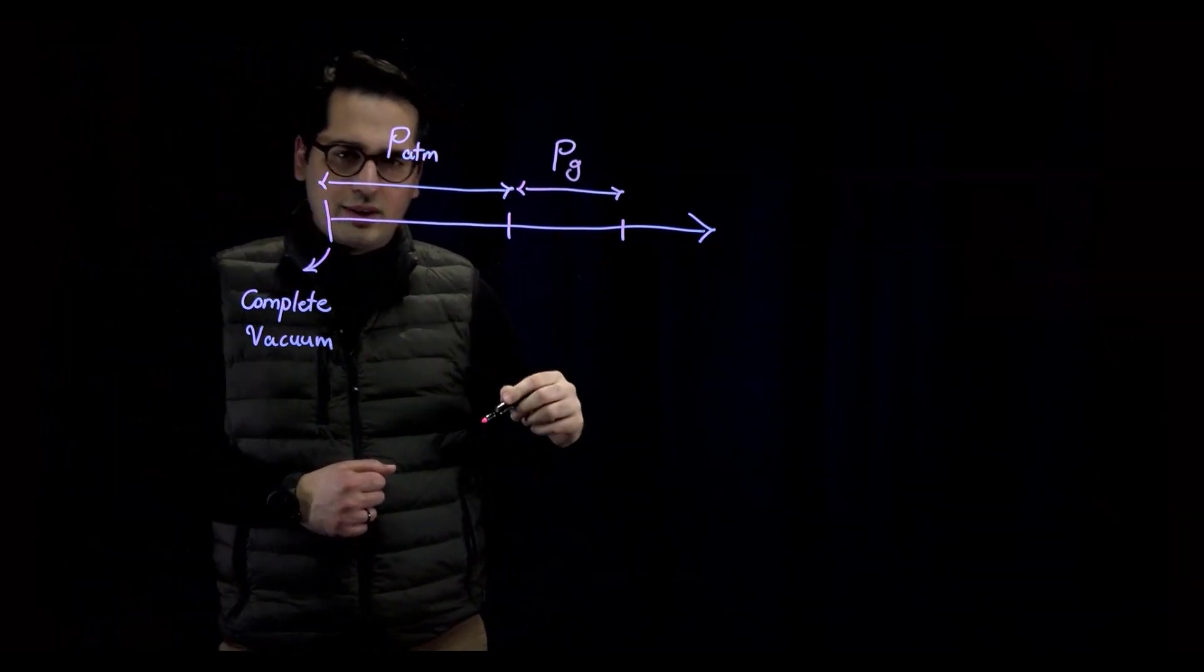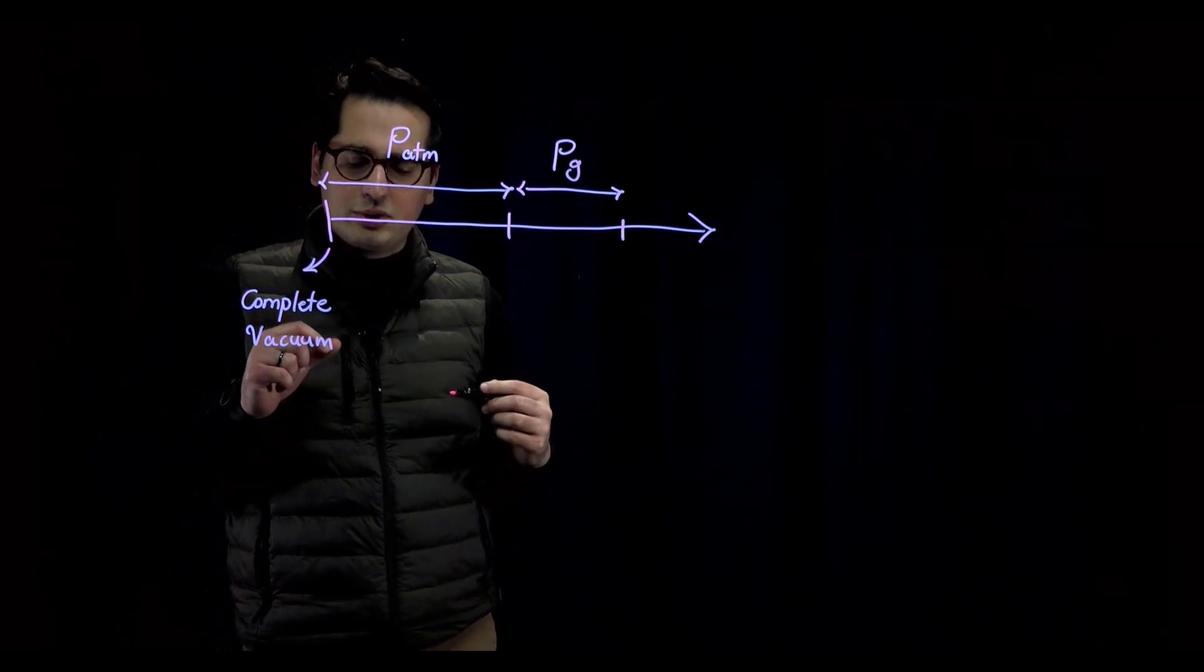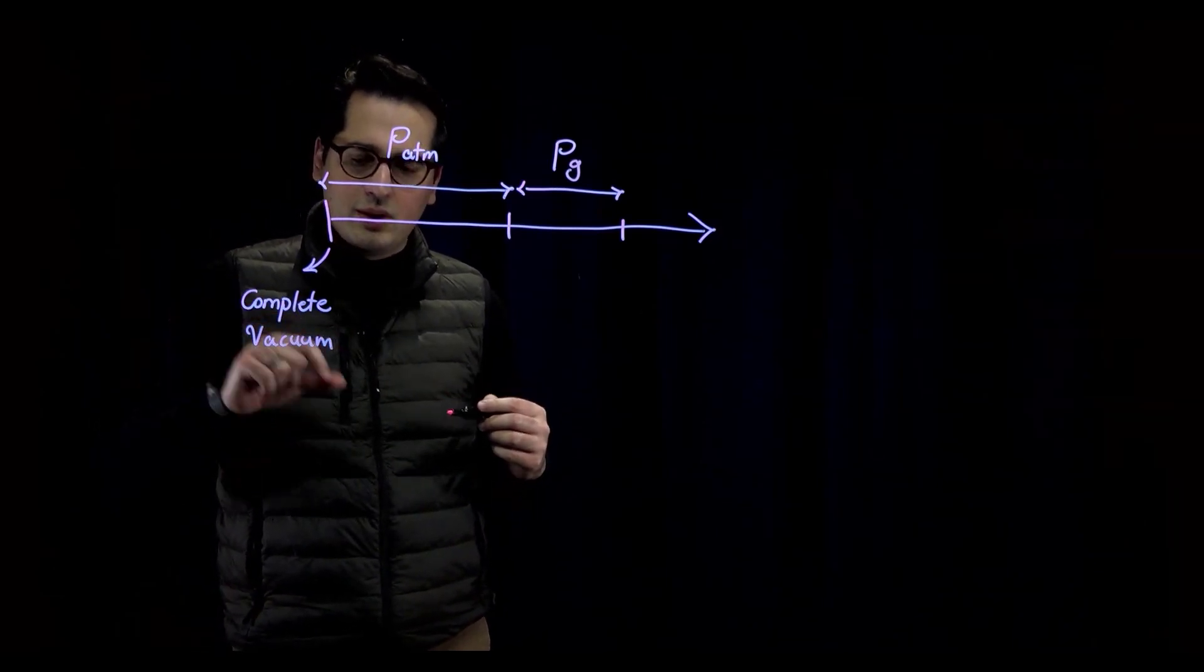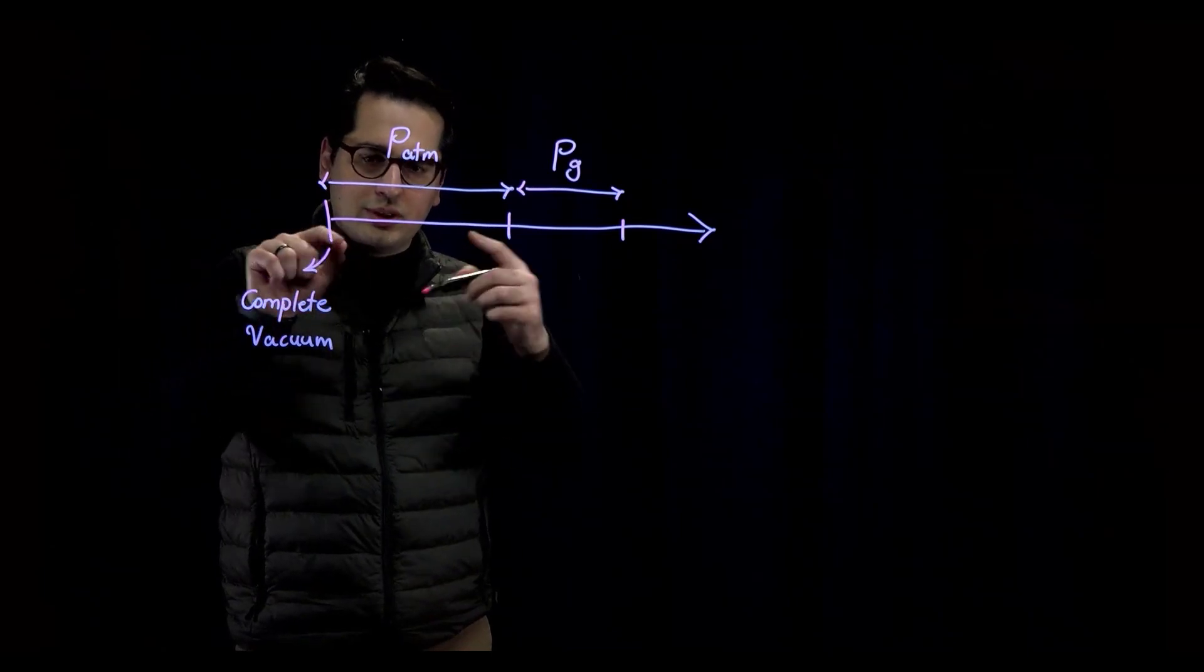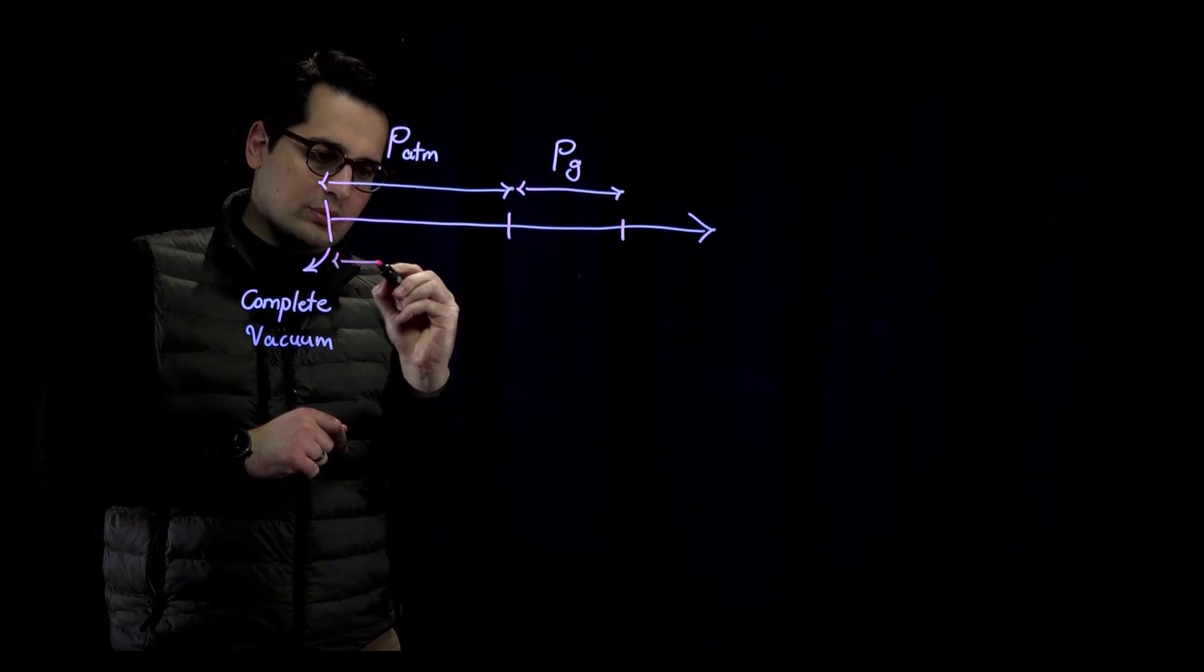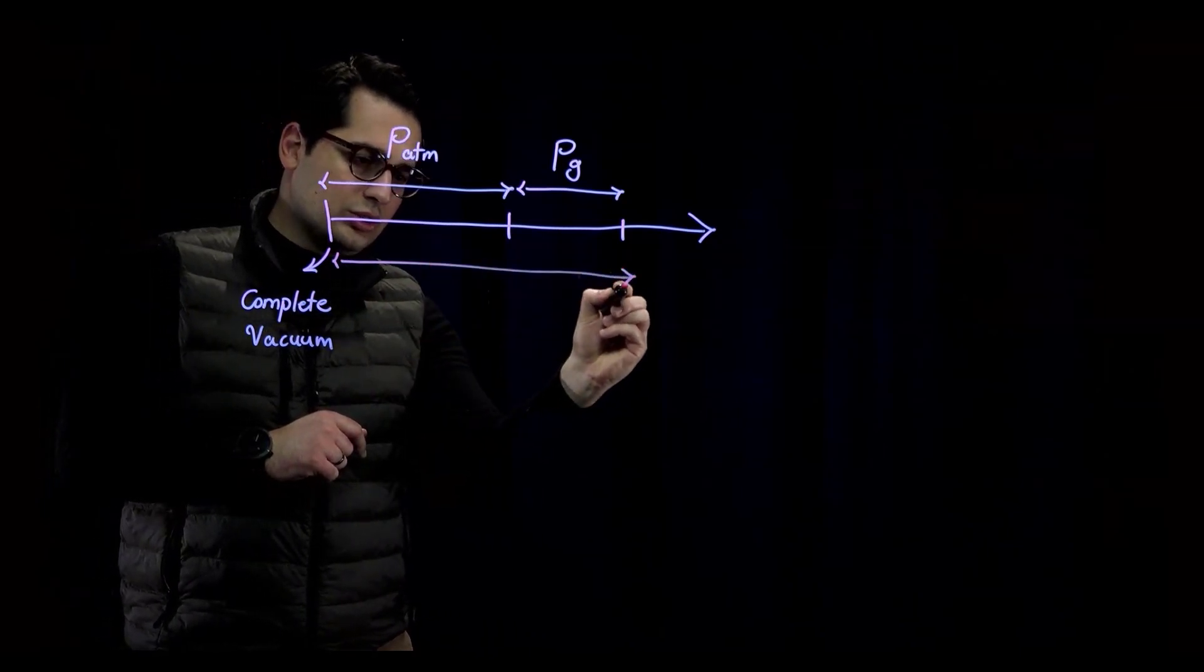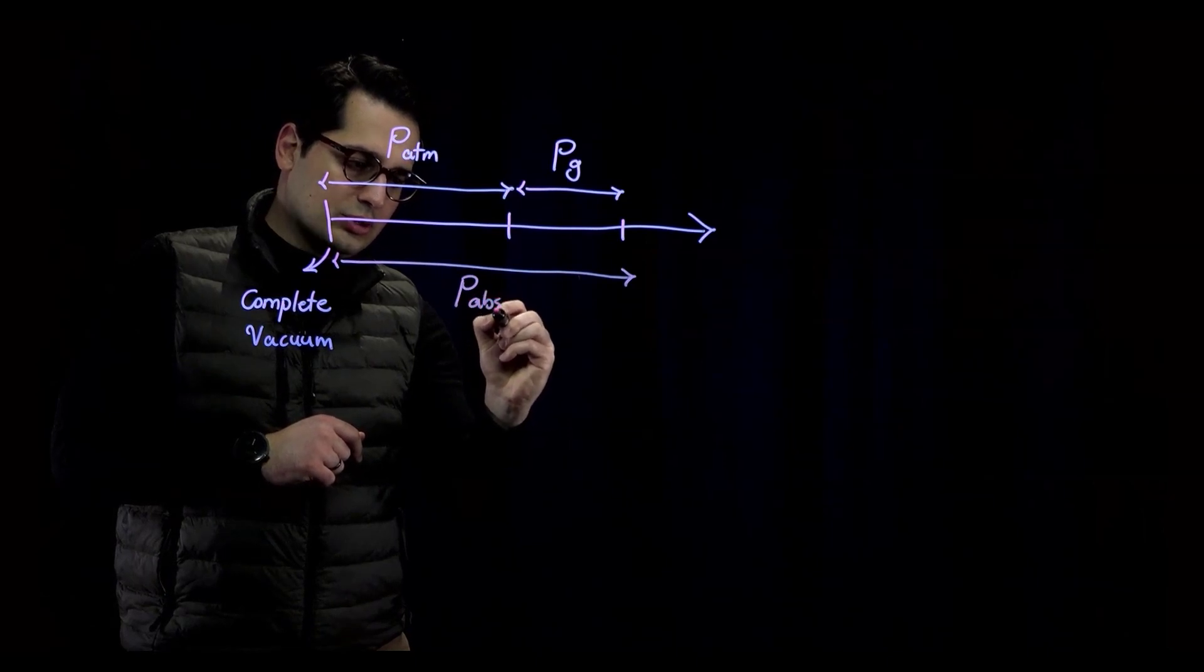Let's go back to the definition. Our absolute pressure is measured with respect to the complete vacuum. So, if I ask you what would be the value of absolute pressure in this case, you're going to be telling me that it's going to be something from here all the way to here. So, this would be your absolute pressure.